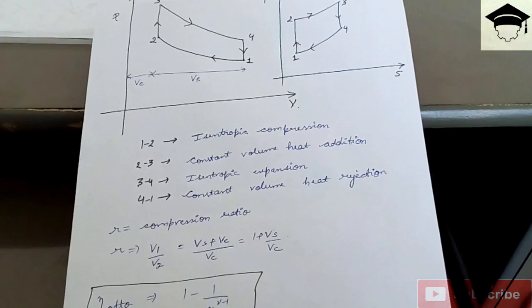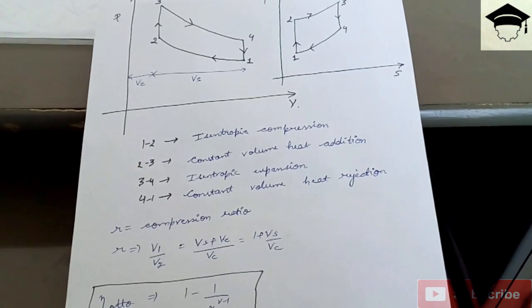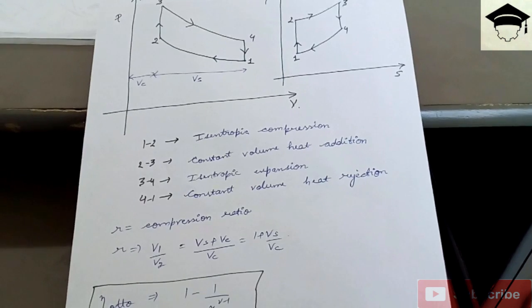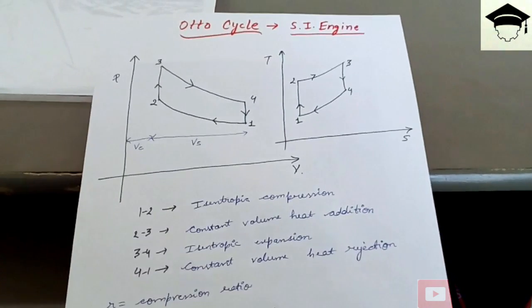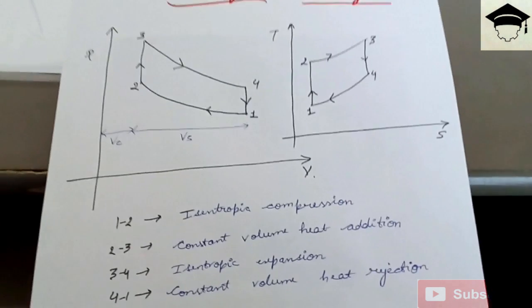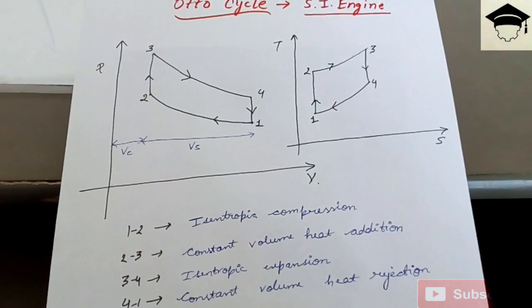So this was the video regarding Otto cycle. I hope you have understood how the PV diagram and TS diagram look like, what are the processes in Otto cycle, how you can find the efficiency, and what is the compression ratio.